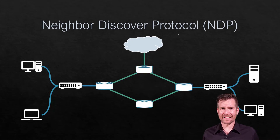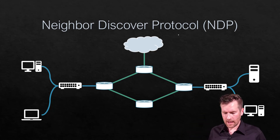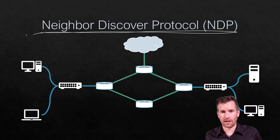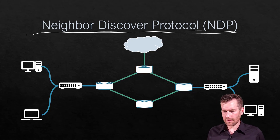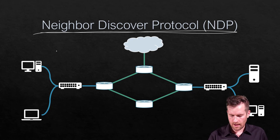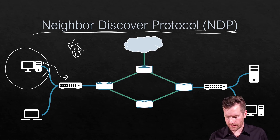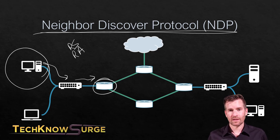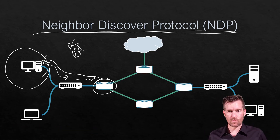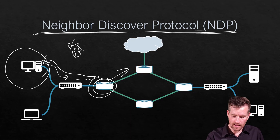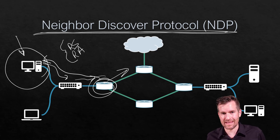ICMP packets are not just for troubleshooting and ping — we do use it for other things, especially it's very critical when it comes to neighbor discovery protocol in IP version 6. The neighbor discovery protocol will use router solicitation and router advertisement to find out what IP address it should have. There will be a router solicitation sent to the router, and then a router advertisement will come back with information on how to get out to the rest of the world.